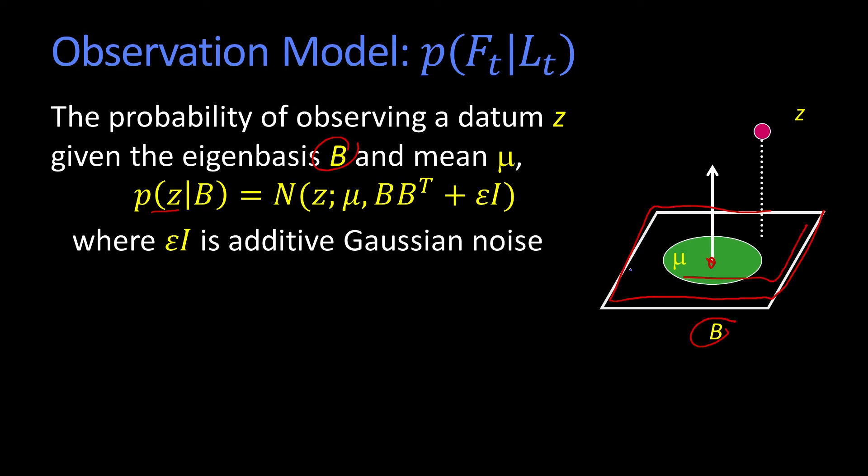And in this plane is in face space. And what this little ellipse shows you is, this is sort of the probabilistic distribution of how the faces fall within that space.